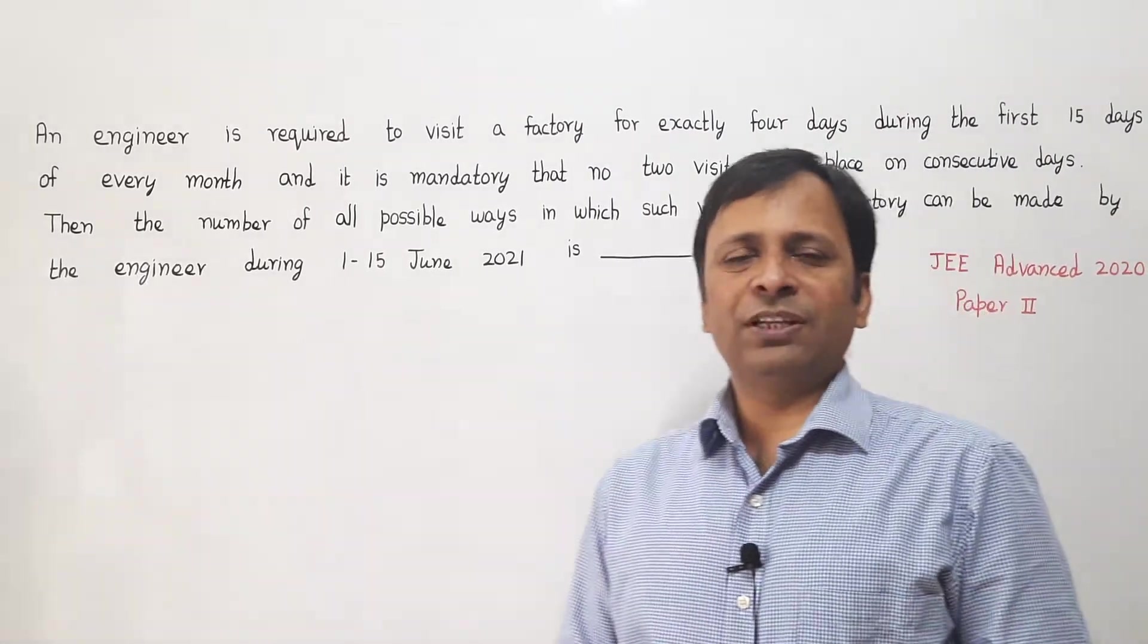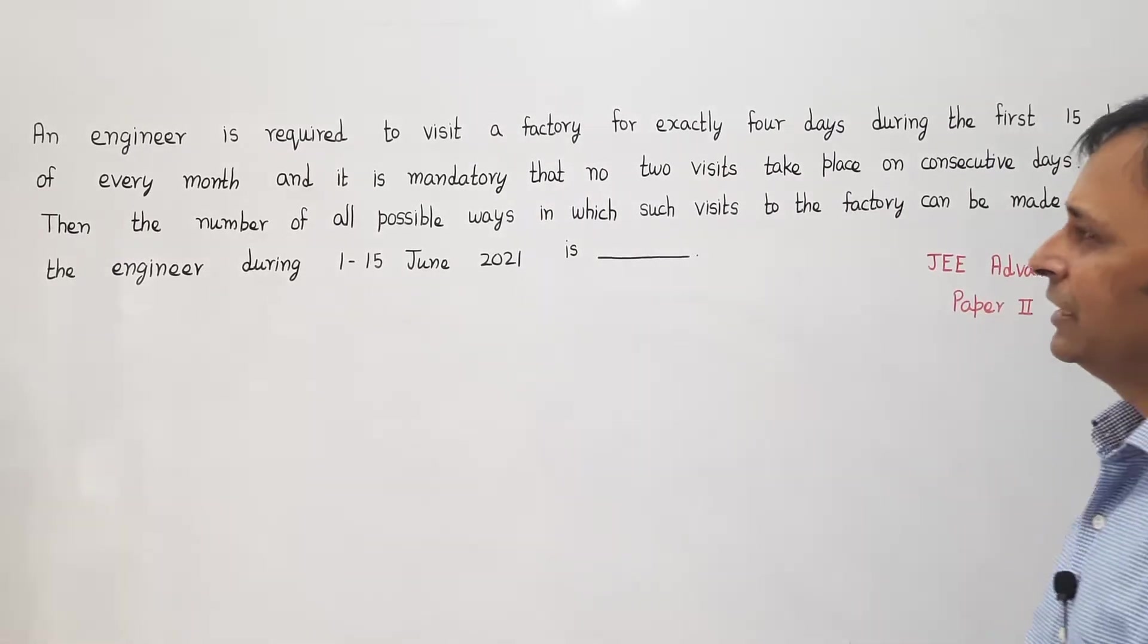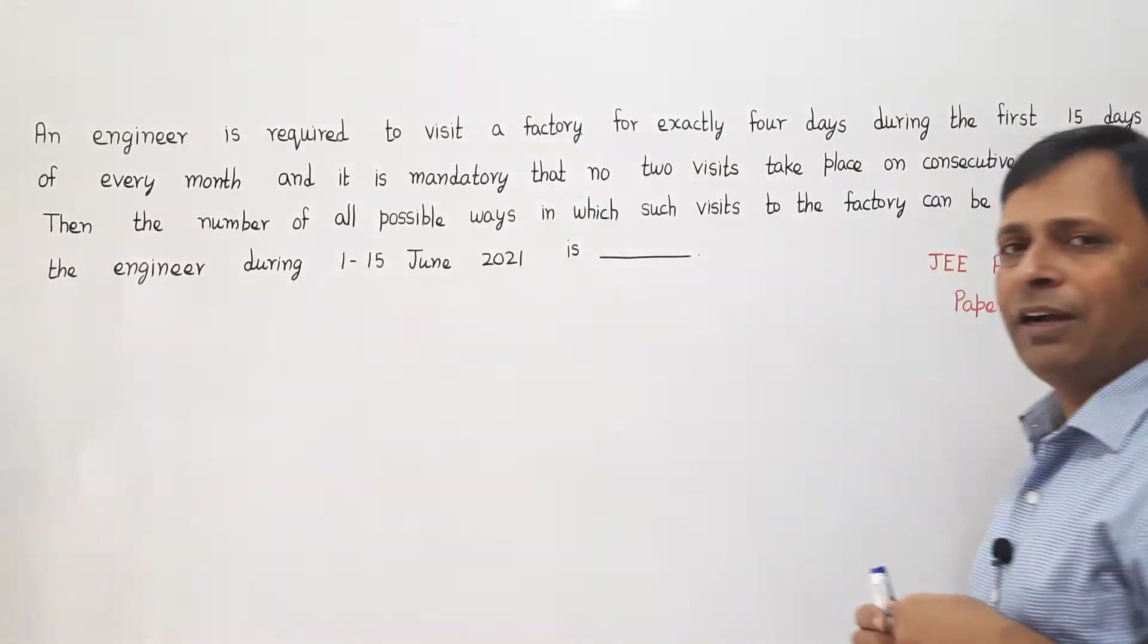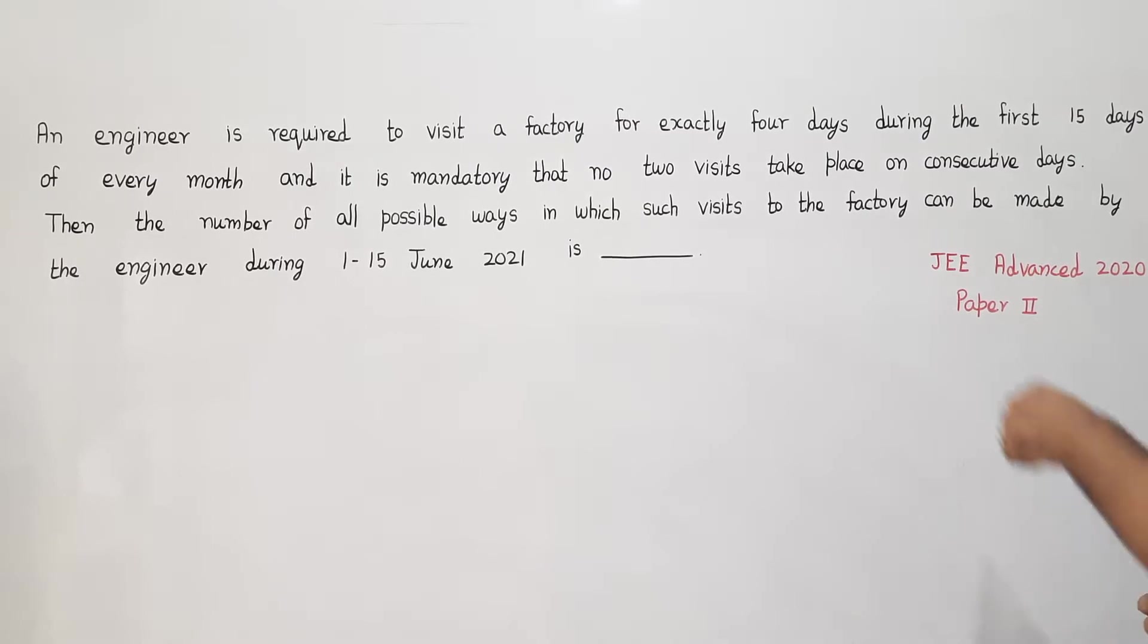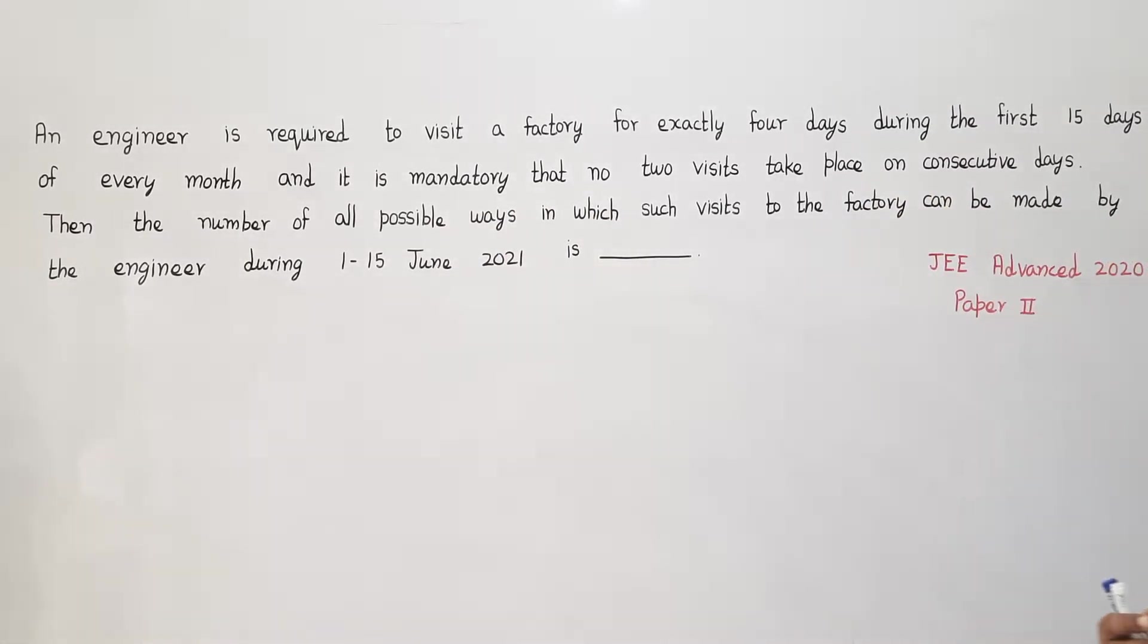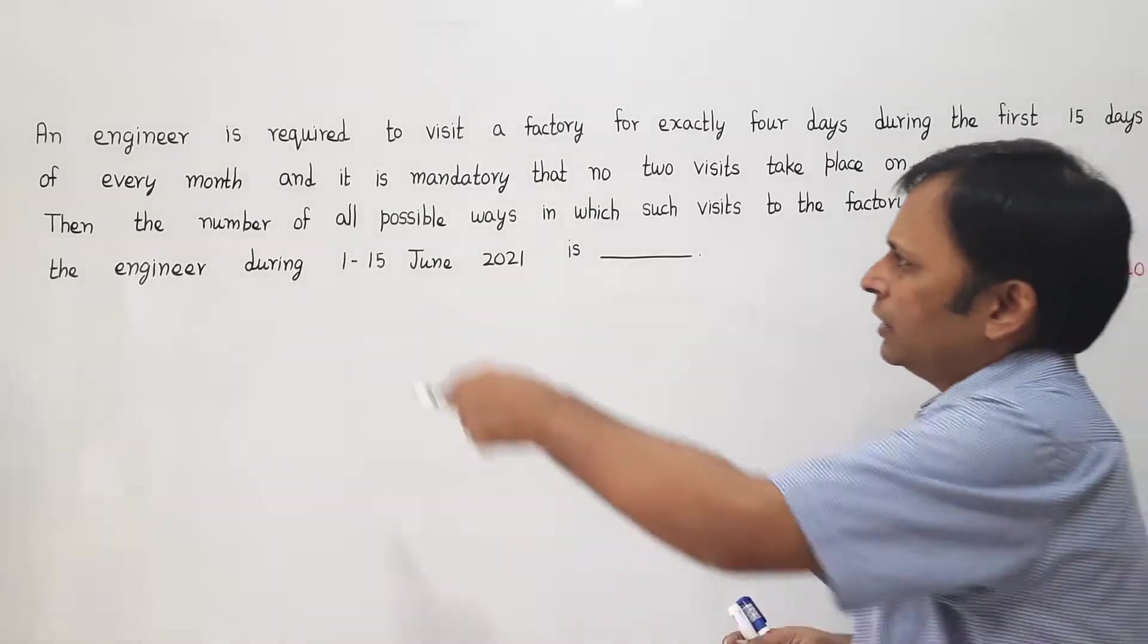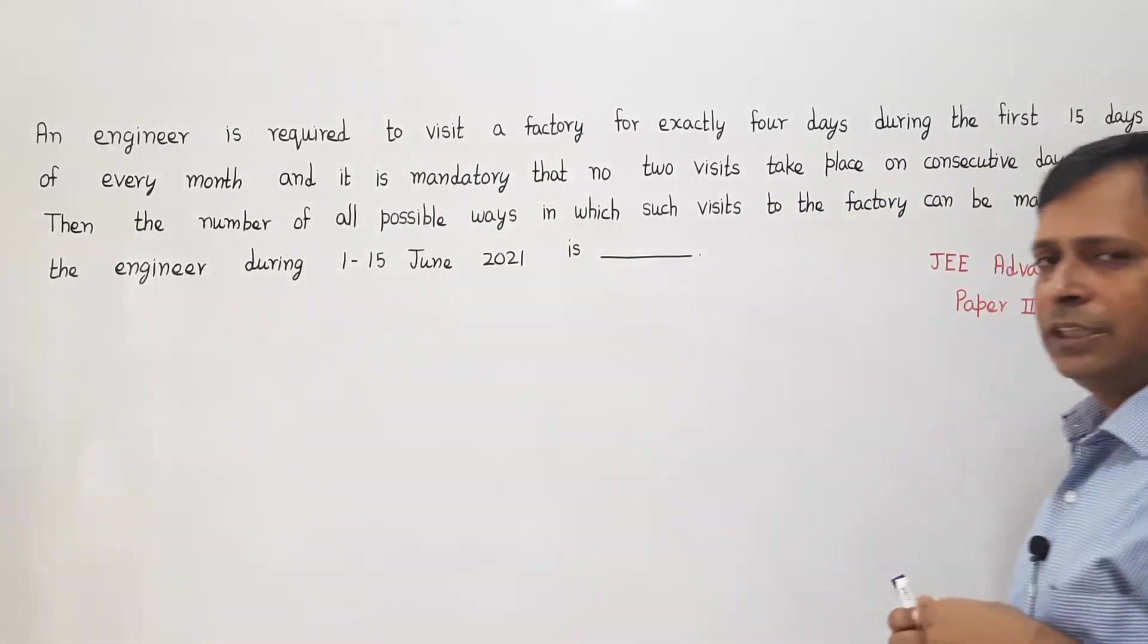An engineer is required to visit a factory for exactly four days during the first 15 days of every month, and it is mandatory that no two visits take place on consecutive days. Then the number of all possible ways in which such visits can be made by the engineer during 1st to 15th June 2021 is...